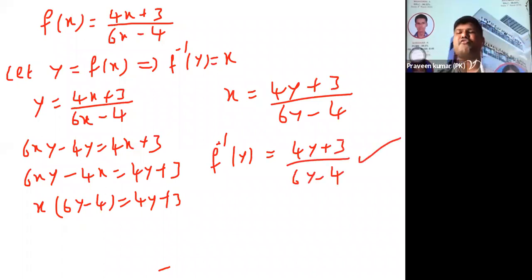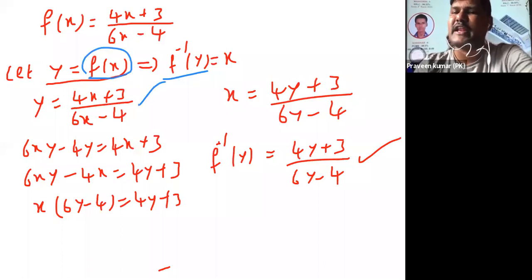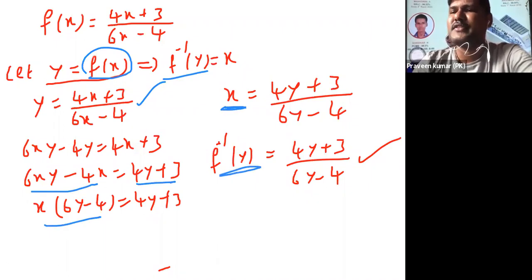Whenever they are asking to find the inverse of f, you can start the problem from let y is equal to f of x. You have transferred to left hand side: f inverse of y is equal to x. Then you can consider in place of f(x) this value, what the given value. Cross multiply, all x terms one side, y terms one side, constant one side. Take x as common, find x value. That x is nothing but f inverse of y. That is only inverse of that particular function. Understand what I am explaining to you, right everyone?